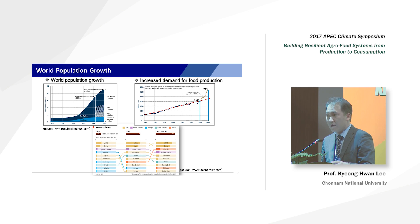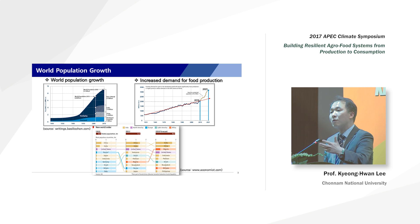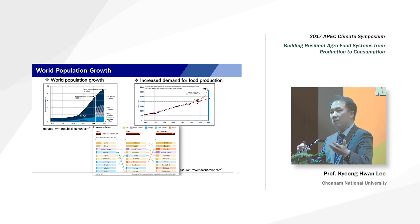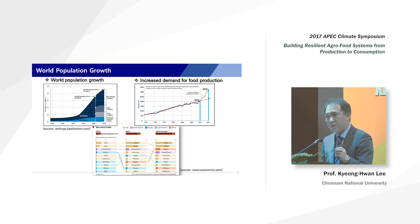So what should we do? We should improve the current agriculture production system or develop some different type of agriculture production systems. As engineers, I am interested in how we can improve or slightly change agriculture production systems using advanced technologies.